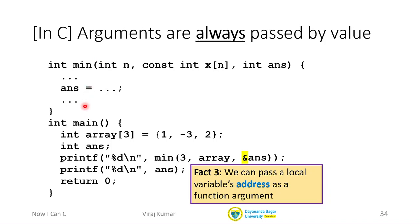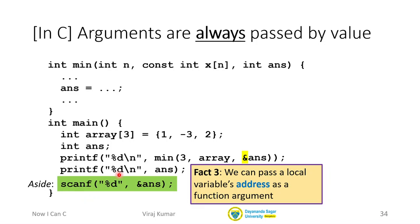Wherever in memory this variable lives, that address is going to be passed to this function. A copy of that address value will be passed, but now this function min will know where this variable lives and can modify it. This syntax ampersand ans is used any time you want a function to modify a value. For example, when we call scanf to read a value from the keyboard, you say %d and give it ampersand ans so that scanf can write into that variable.